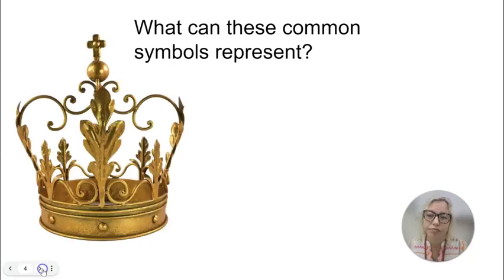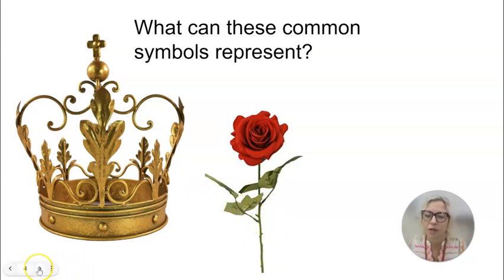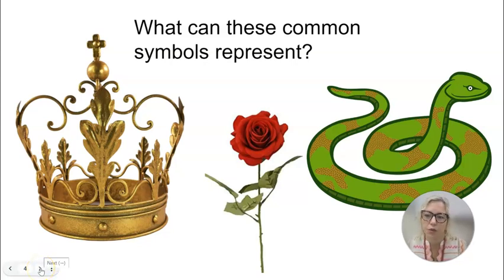Symbols can mean more than one thing. How about a crown? It usually represents wealth, power — the king or queen wears a crown. How about a rose? It usually represents love, but it can also represent danger — the thorns, the hidden dangers of love, maybe. How about the snake? A snake can represent evil, or it can also represent cunning, being wily. It might also represent change, in the way that snakes shed their skin and change. So symbols, even common ones, can represent more than one thing.